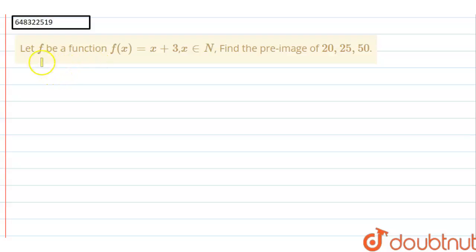Hi, welcome to Doubtnut. Let's start the question. It says, let f be a function f(x) = x + 3, x belongs to N. Find the pre-image of 20, 25, 50.